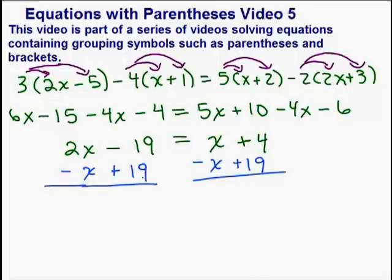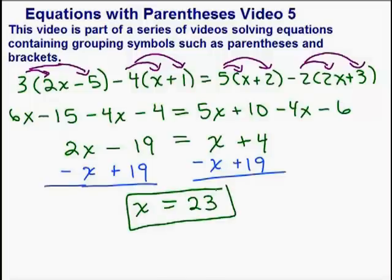So this gives me 2x minus x is just x on the left-hand side since the 19 and negative 19 is just 0. And on the right-hand side, x minus x is 0. 4 plus 19 is 23. And we are done. So we didn't even have to divide both sides by a coefficient of x because we ended up with x equals when we did this 2x minus x. Not bad at all.